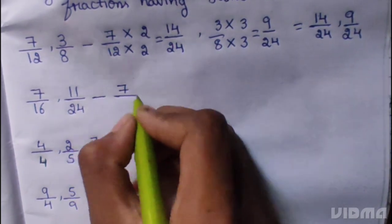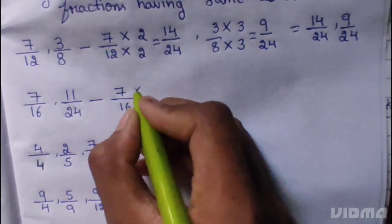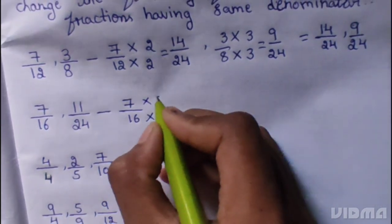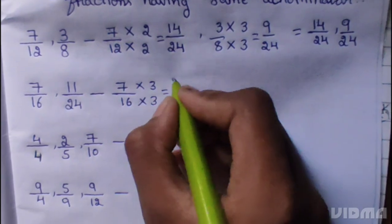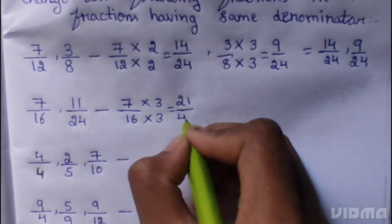7 by 16. 7 multiplied 3, 16 multiplied 3. 7 times 3 is 21, 16 times 3 is 48.